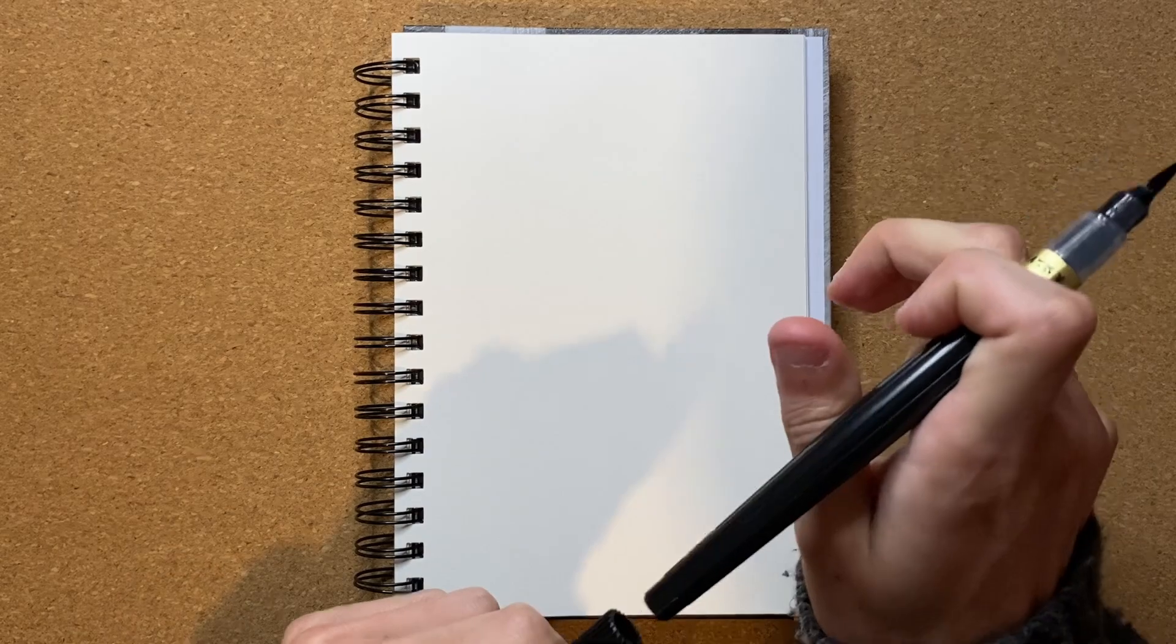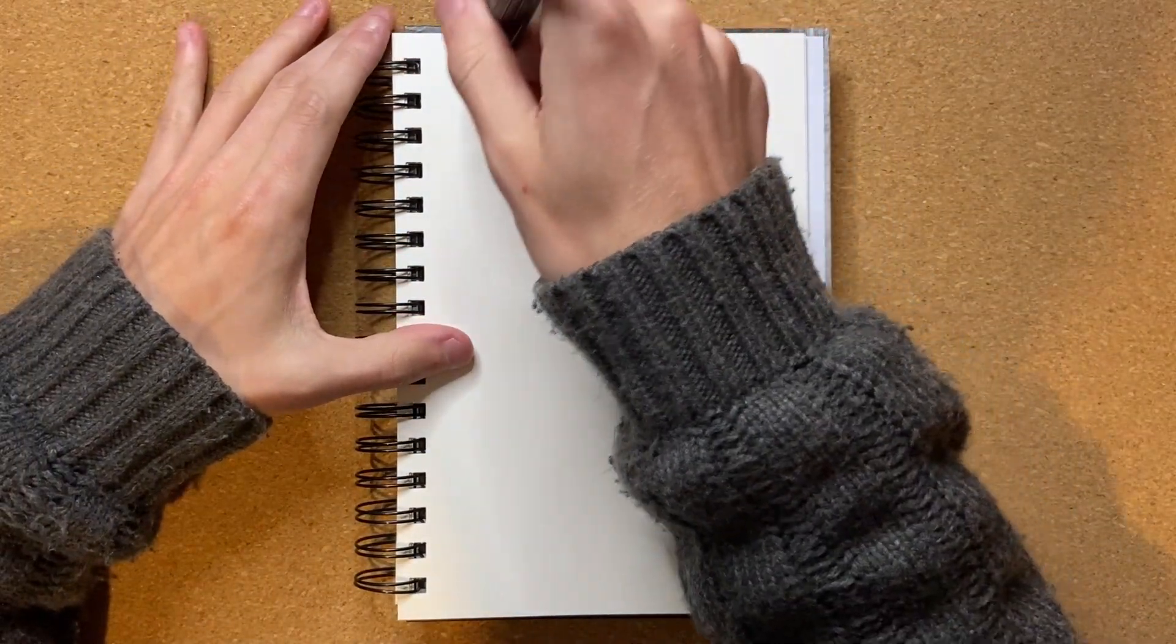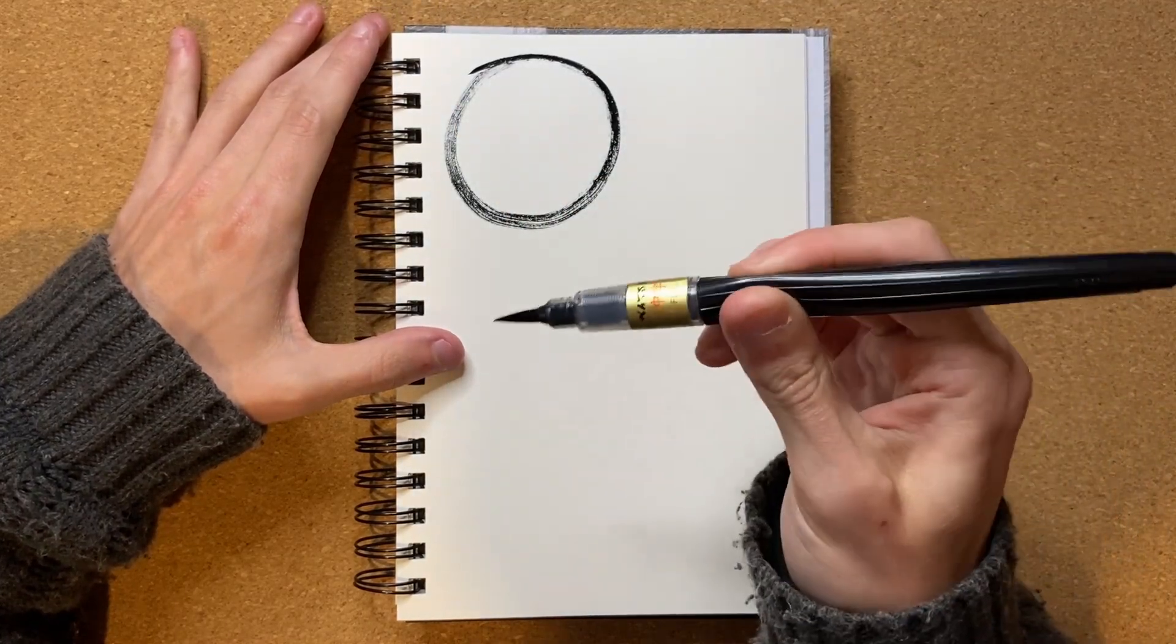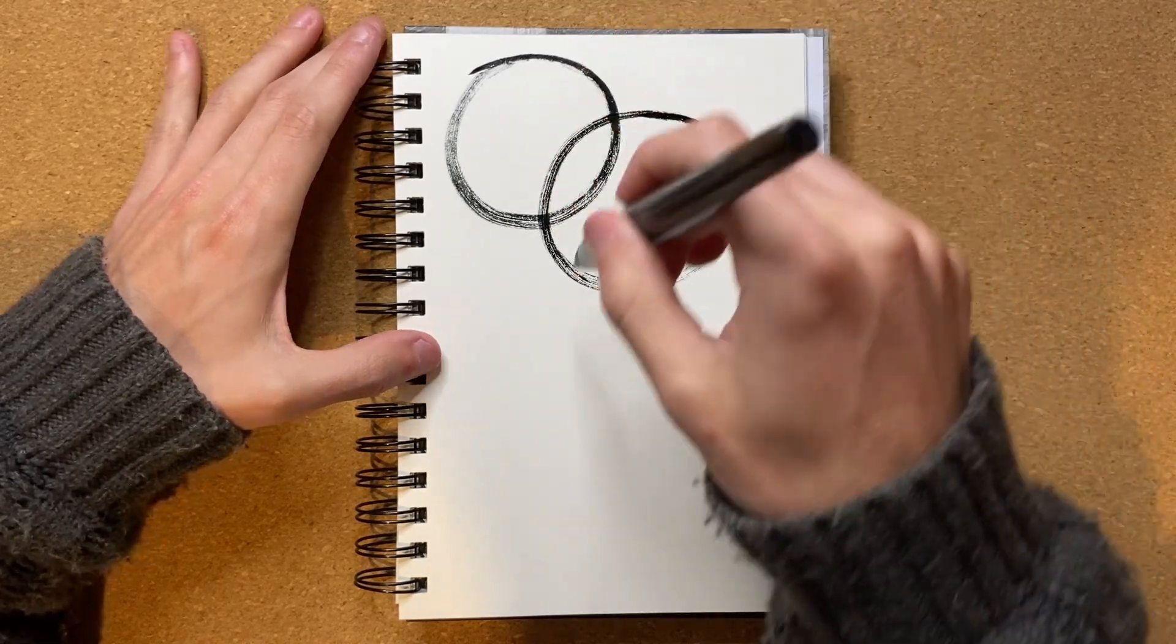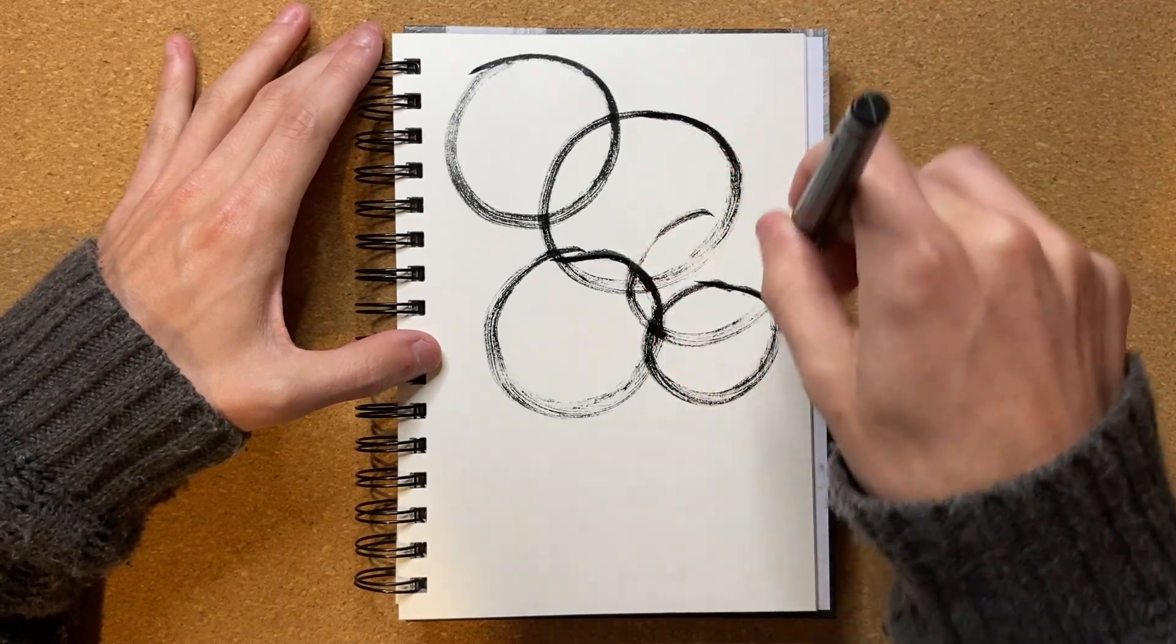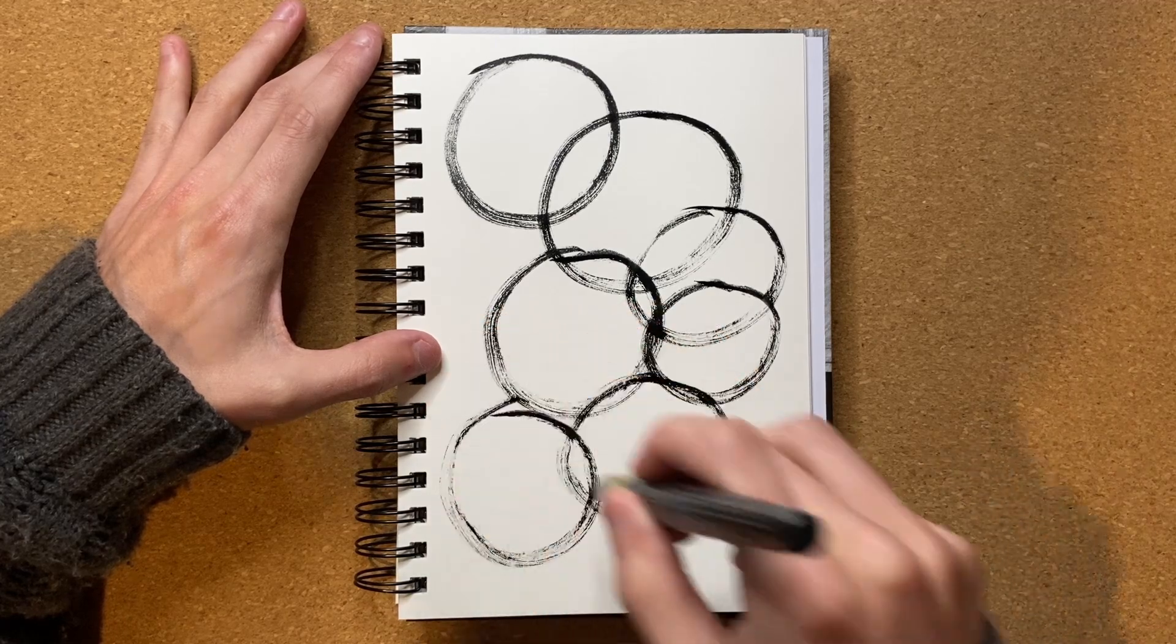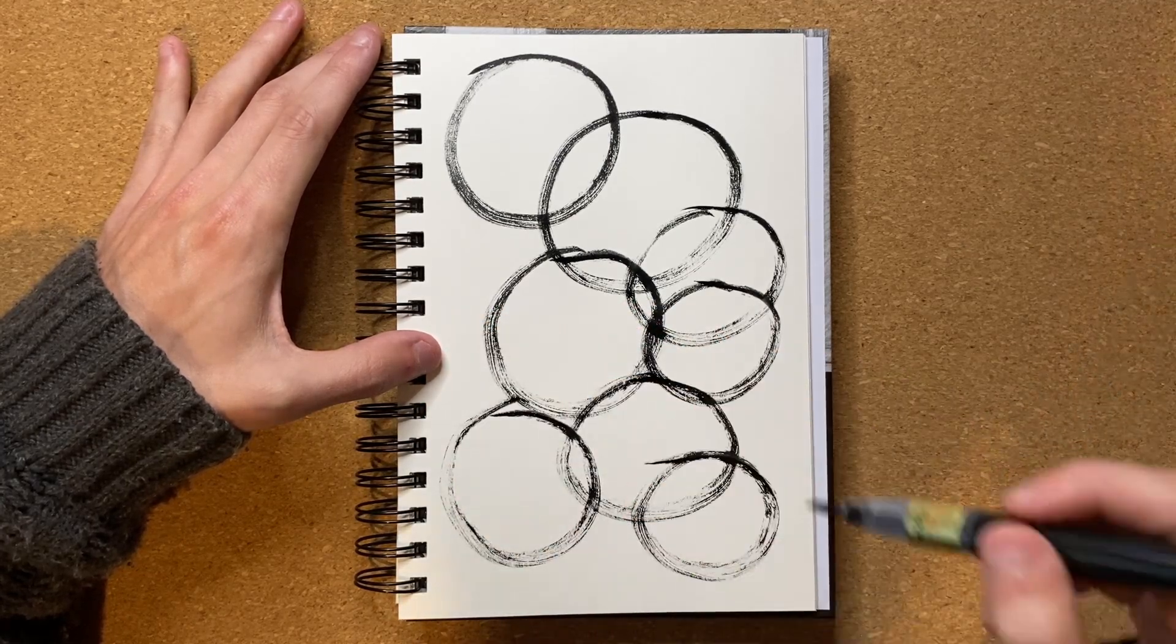Alrighty, let's start at the top of the page right here. I'm just going to do a circle, and I'm going to try to get some ink in the pen by squeezing. Let's do another circle right here, and another circle, and another one, and another one, and one right there, one right there. Oh yeah, this is definitely dying a little bit. Let's do the final one right there.